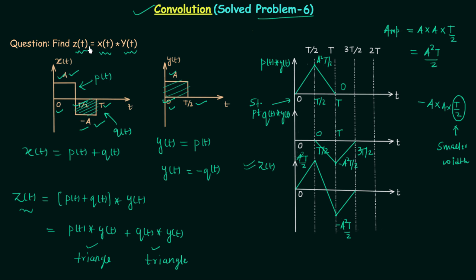So we have found signal Z(t). I hope you now understand how to use the shortcut to directly obtain the waveform when convoluting two rectangular pulses. When the rectangles have the same width the result is a triangle, and when they have different widths you get a trapezoid. If you have any doubt, ask in the comment section. See you in the next one.